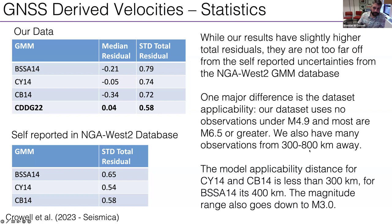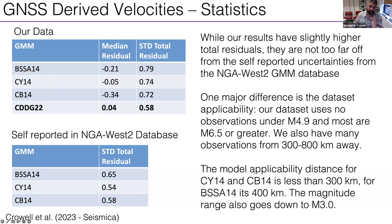There are important caveats: we don't include anything under magnitude 4.9 since we can't record it well, most of our observations are at the high end — magnitude 6.5 or greater — and we have many observations between 300 and 800 kilometers, whereas the NGA West 2 applicability range is mostly under 400 kilometers. Their magnitude range goes down to 3.0 and tops out around 8. If larger events were incorporated into a future NGA West 3, the statistics might look even better.